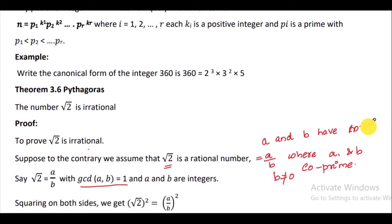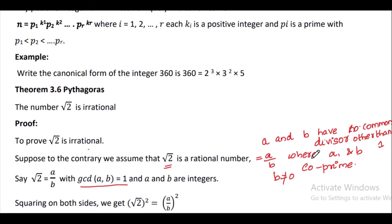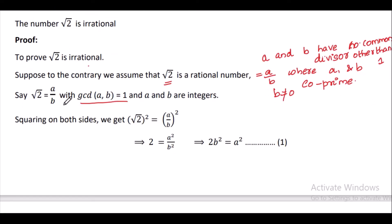A and b have no common factors. From the equation square root of 2 equals a/b, let us take this as our assumption and proceed. We square both sides.